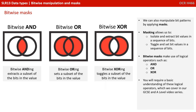We can also manipulate bit patterns by applying masks. Masking allows us to isolate and extract bit values in a sequence of bits, or toggle and set bit values in a sequence of bits. Bitwise masks make use of logical operators such as AND, OR, and XOR. You'll require a basic understanding of these logical operators, which are covered in the GCSE and A-level video series.